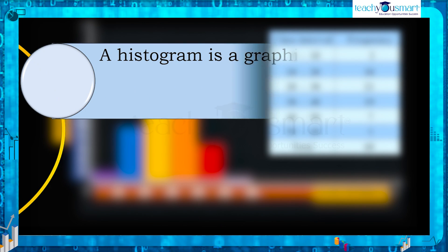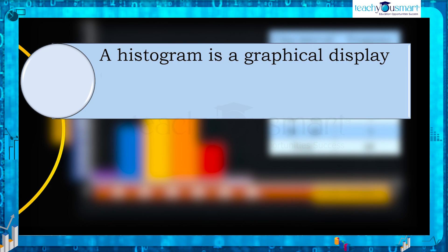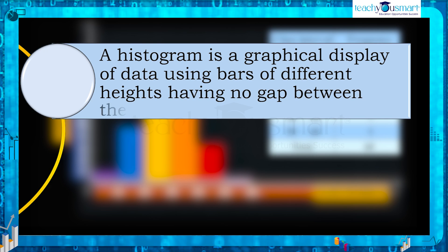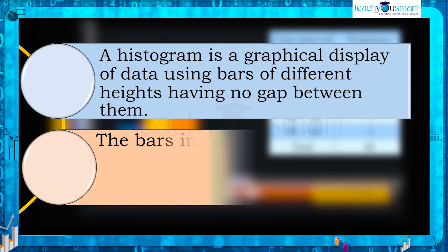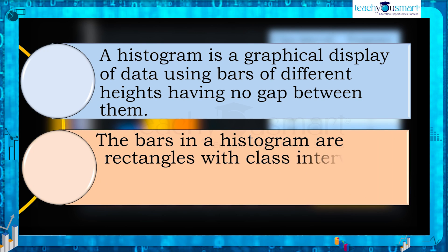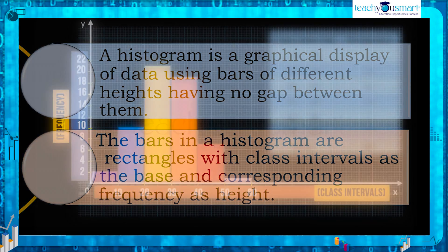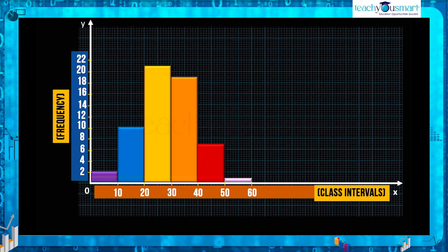A histogram is a graphical display of data using bars of different heights having no gap between them. The bars in a histogram are rectangles with class intervals as the base and corresponding frequency as height.